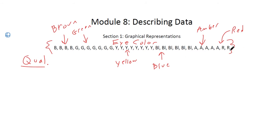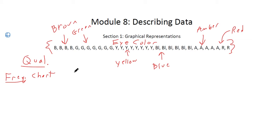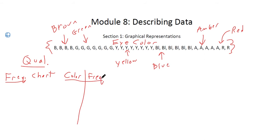The way this data is presented doesn't really mean anything to the reader because it's just a list of letters. However, if we want to summarize that, we can create what we call a frequency chart. A frequency chart is basically the first step to getting to graphical representations of data. With a frequency chart, we have the frequency count for all our values — frequency meaning how often a value occurred. I'll make a two-column table with eye color and its corresponding frequency.